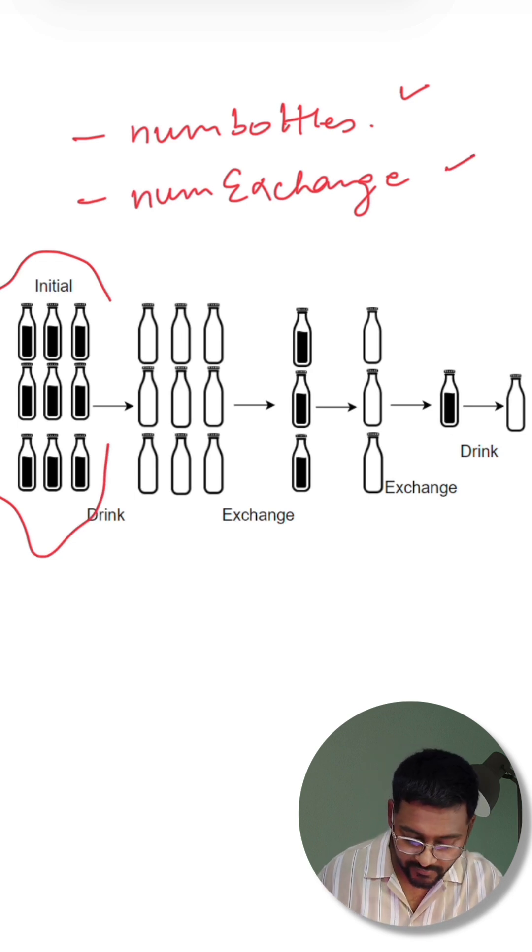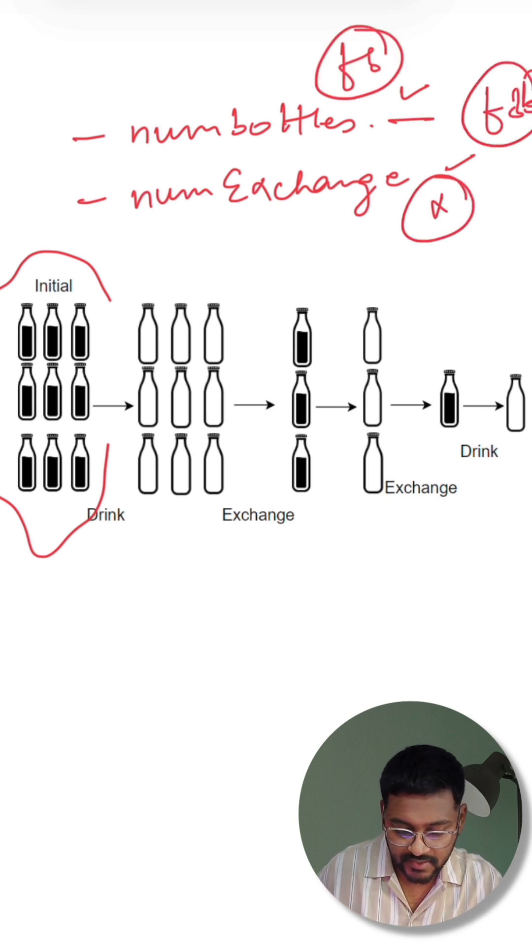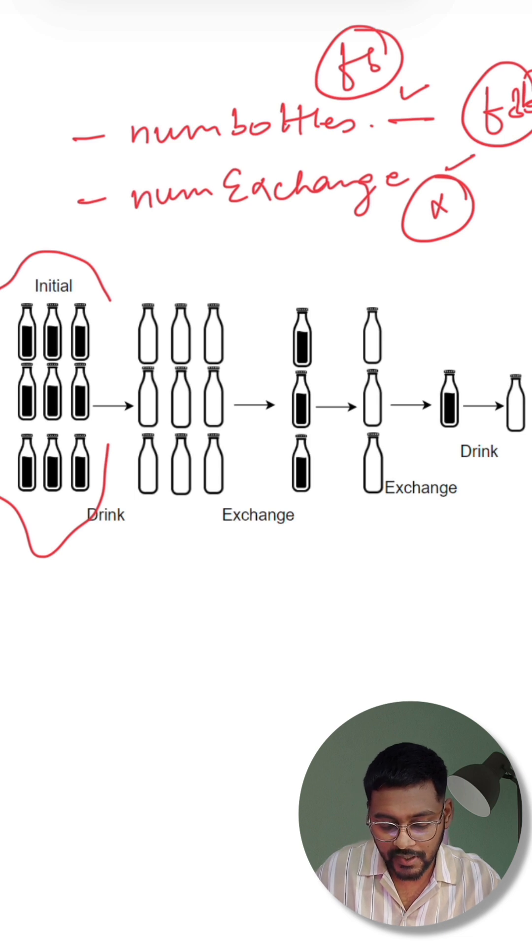It's a kind of operation that if I drink number of bottles, let's say number of bottles are FB and number of exchange bottle is let's say X. So if I drink X completely filled bottles, those will become empty.